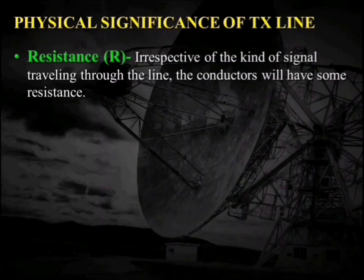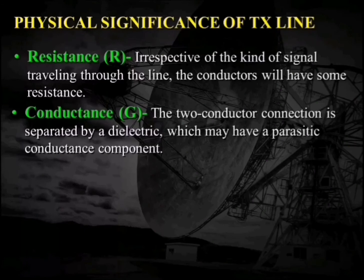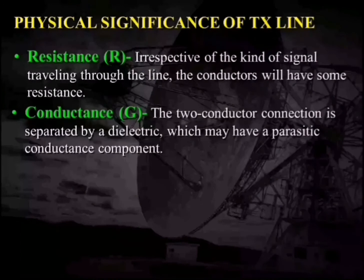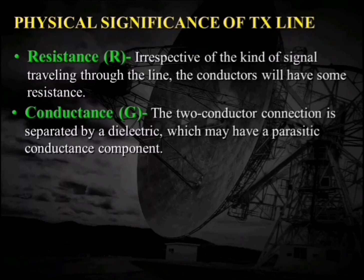Second is the conductance. The two-wire connection is separated by a dielectric which may have a parasitic conductance, meaning some leakage or losses will be there through that dielectric. To account for these dielectric losses, we have introduced the conductance G.